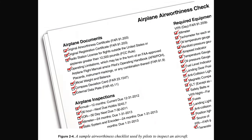Each airplane has a set of logbooks that include airframe and engine, and in some cases propeller and appliance logbooks, which are used to record maintenance, alteration, and inspections performed on a specific airframe, engine, propeller, or appliance. It is important that the logbooks be kept accurate, secure, and available for inspection. Airplane logbooks are not normally kept in the airplane. It should be a matter of procedure for the pilot to inspect the airplane logbooks or a summary of the airworthy status prior to flight to ensure that records of maintenance, alteration, and inspections are current and correct.